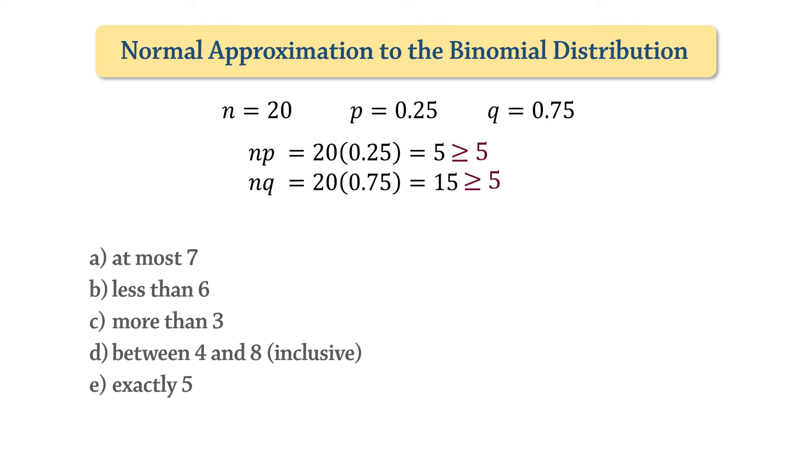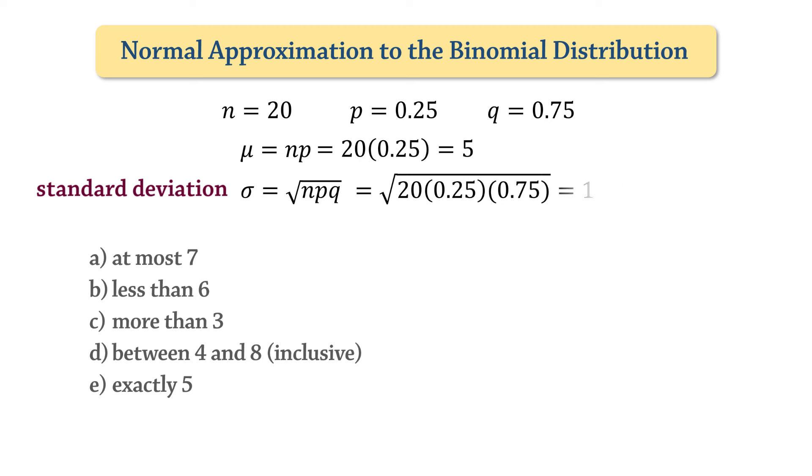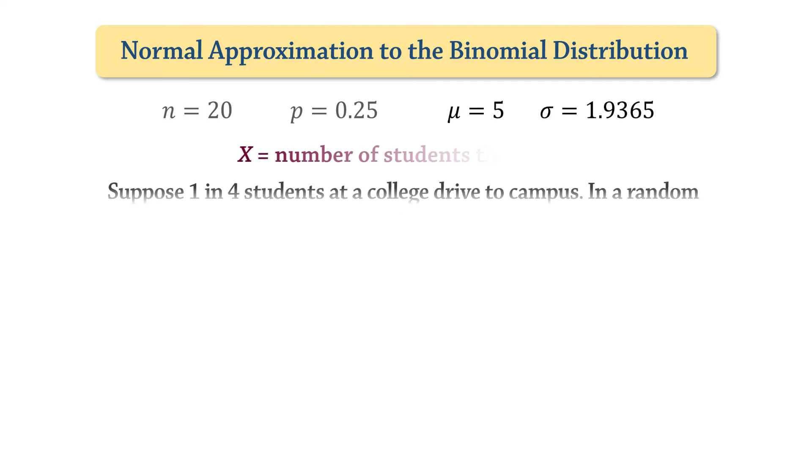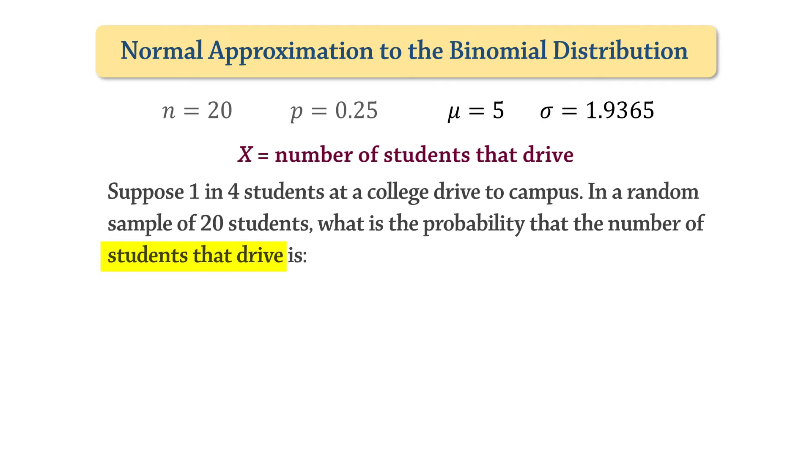So the requirements are met. Now, for a binomial distribution, the mean mu equals n times p, which gives 5 in this case. And the standard deviation sigma is the square root of npq, which gives 1.9365. The number of successes x, or the random variable, is the number of students that drive to campus.